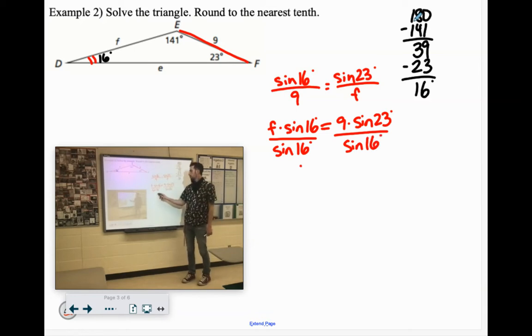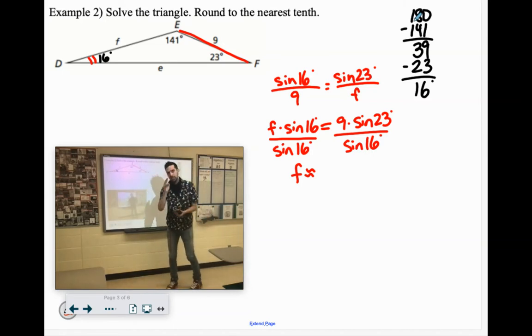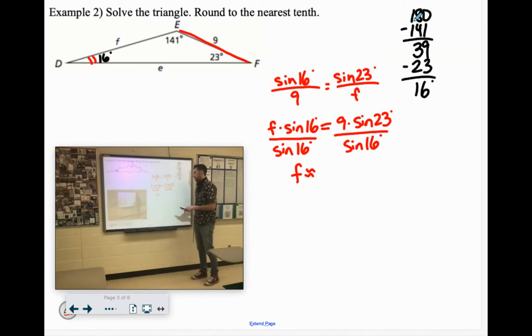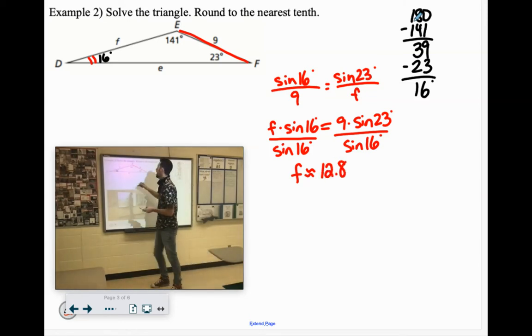Now again, we're going to be approximating here, so put this squiggly equal sign. If you forget it, it's fine, but when you're approximating, that's usually common. 9 times sine of 23 divided by sine of 16 is 12.75, so we'll call it 12.8. So that was side F, 12.8.